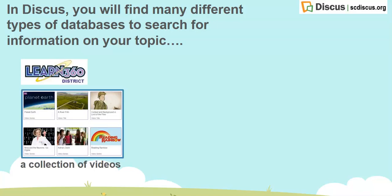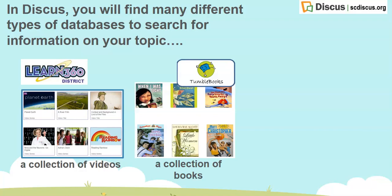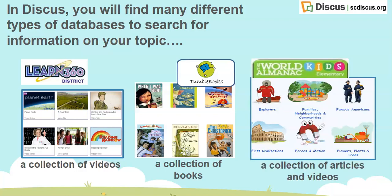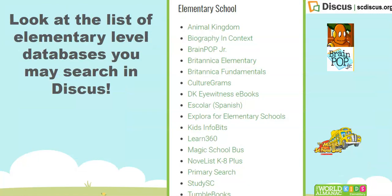For example, a collection of videos in Learn 360, a collection of books, and a collection of articles and videos in the World Almanac. Look at the list of elementary level databases you may search in Discus, from Animal Kingdom all the way to World Almanac.